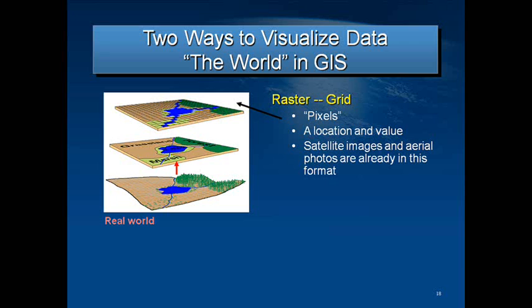Satellites and aerial rasters are the most common, and that's no surprise. They're pretty much just a picture taken from the air that is geographically referenced. However, resolution — the pixel size, in other words — is a big concern.